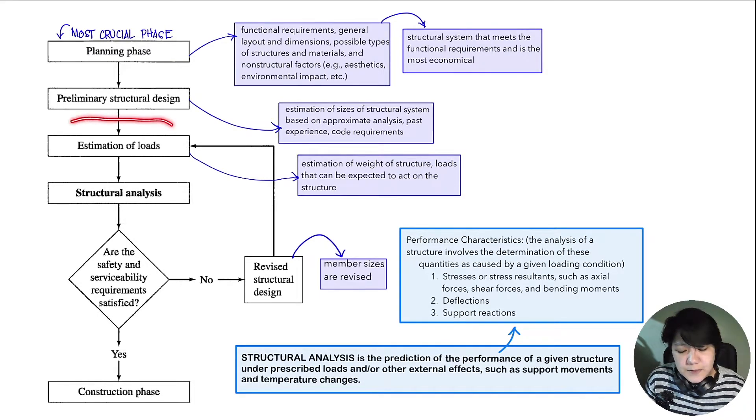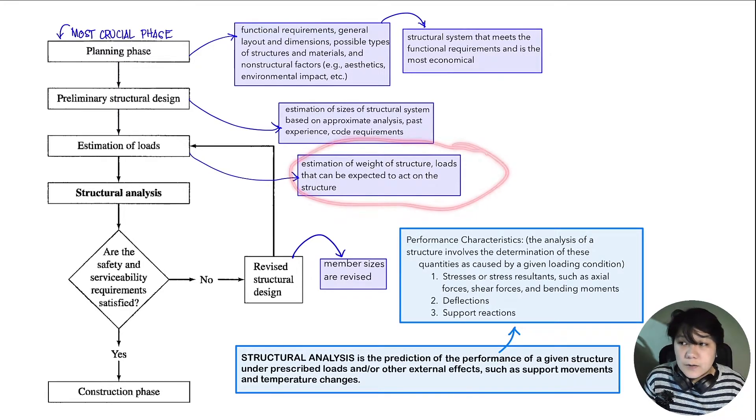And then the next step is the estimation of load. This is the estimation of the weight of the structure itself and the different loads that are expected to act on your structure. For example, in our residential houses, you have your dead loads, live loads, rain loads, earthquake loads, and wind loads. This loading, we could get from different codes, which we will talk about on a different video.